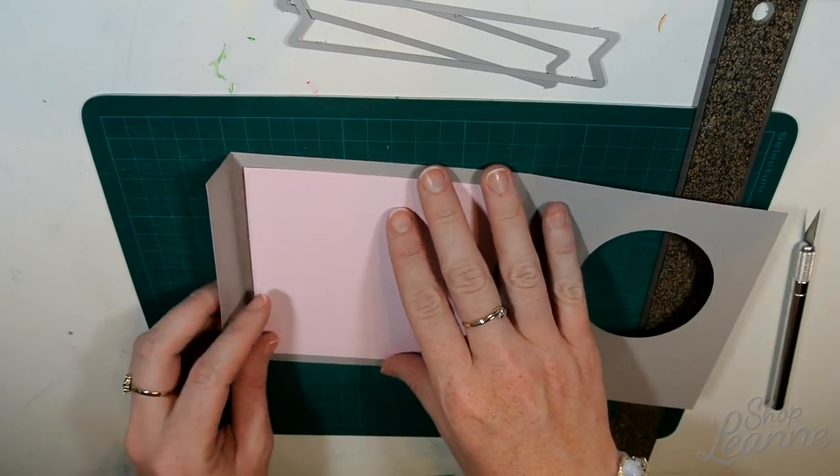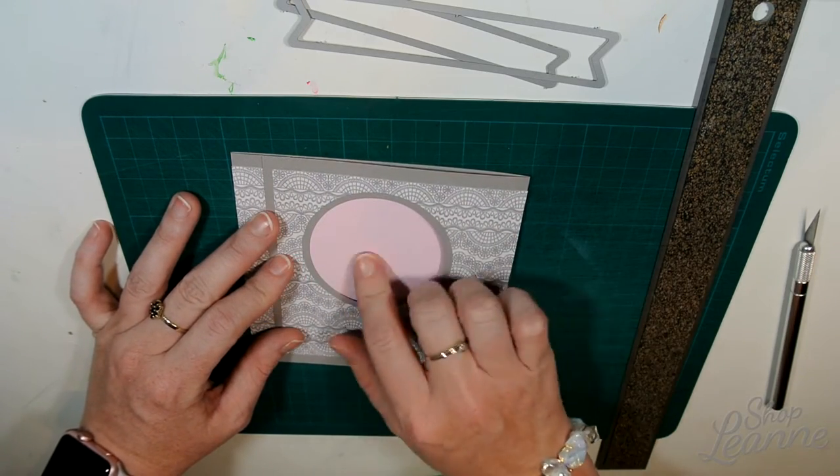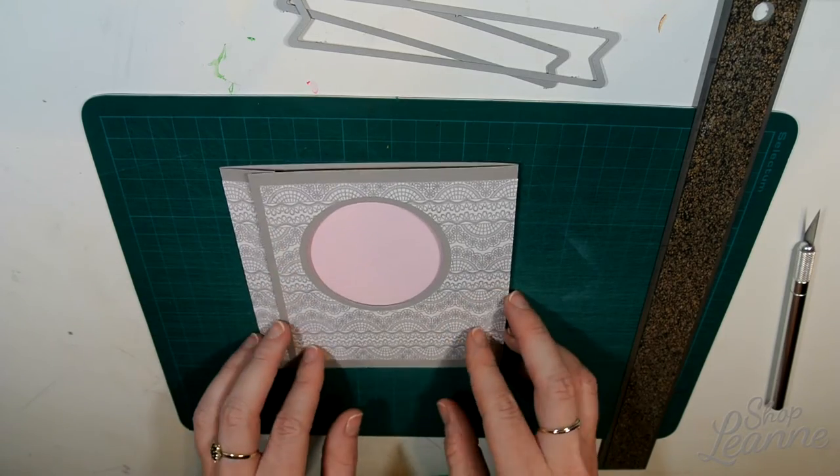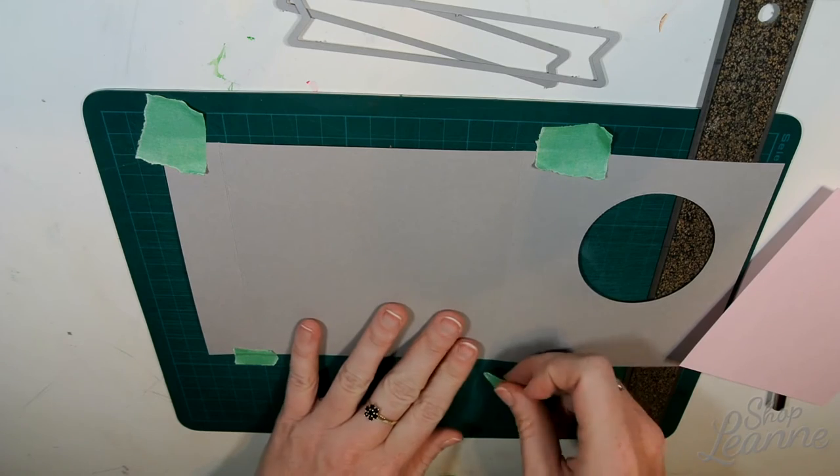I've cut this paper here to be four and a half inches square, so I left a little bit of a border. This is going to serve as the backdrop for my image as well as the inside base for my card.